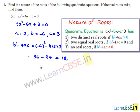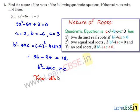So we got b² minus 4ac as 12, which is greater than 0. Therefore, the given equation has 2 distinct real roots.